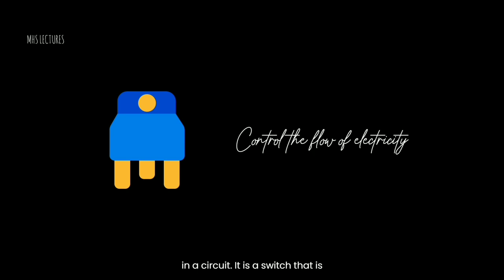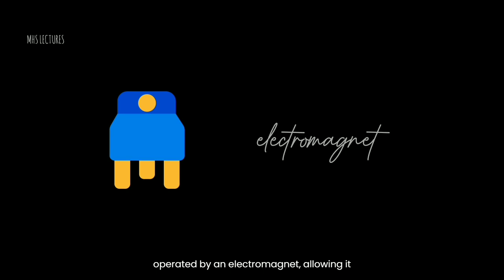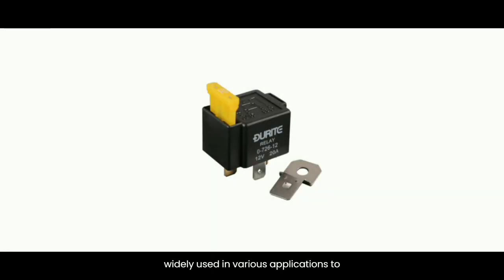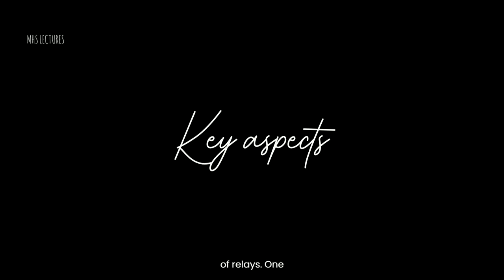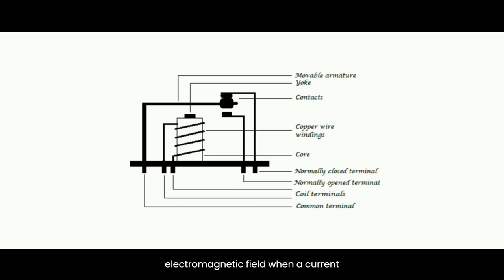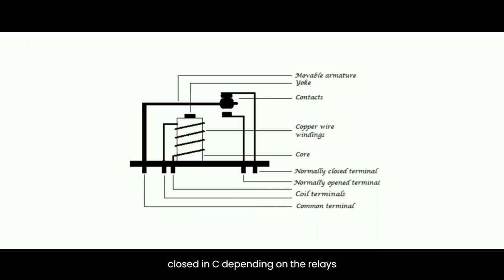A relay is an electrical device used to control the flow of electricity in a circuit. It is a switch operated by an electromagnet, allowing it to open or close contacts in response to an electrical signal. Relays are widely used to control high-voltage or high-current circuits using low-voltage or low-current signals. A typical relay consists of a coil, a set of stationary contacts, and a movable armature. The coil is made of copper wire wound around a core, creating an electromagnetic field when current passes through it. The contacts are metallic plates that can be either normally open (NO) or normally closed (NC).